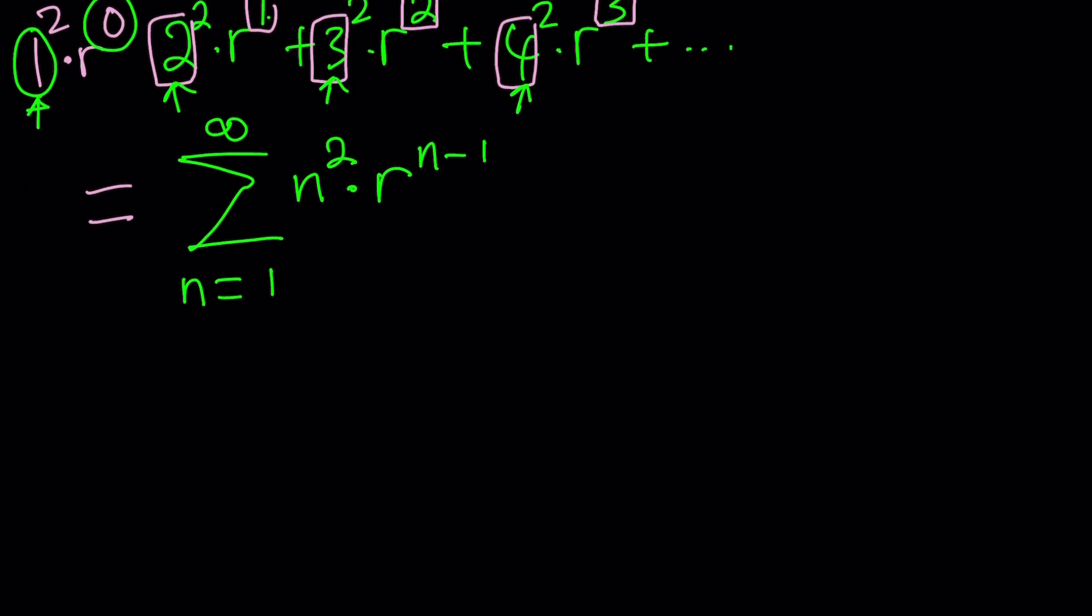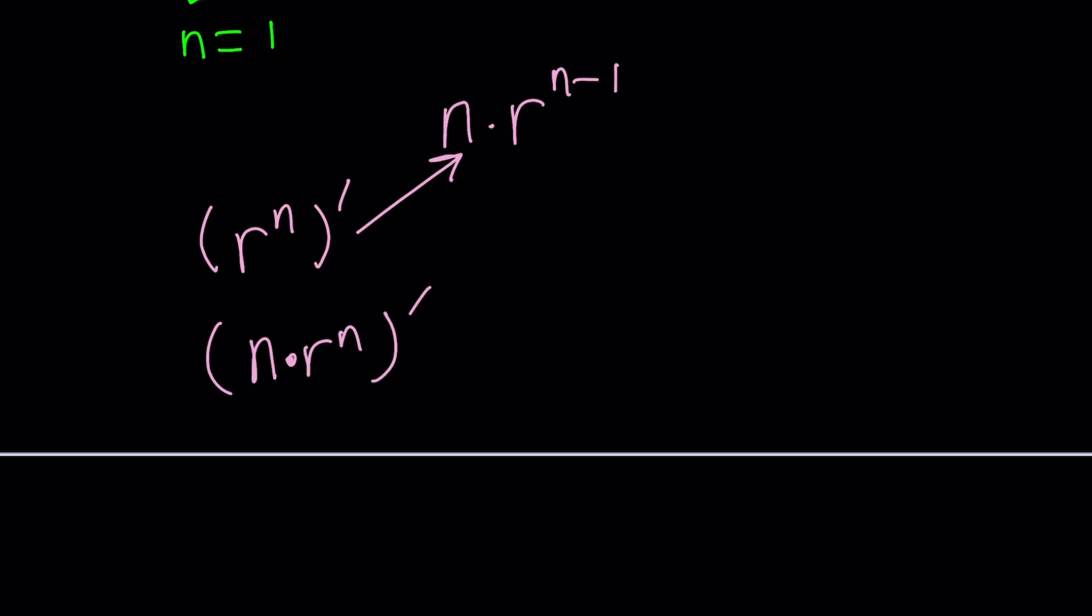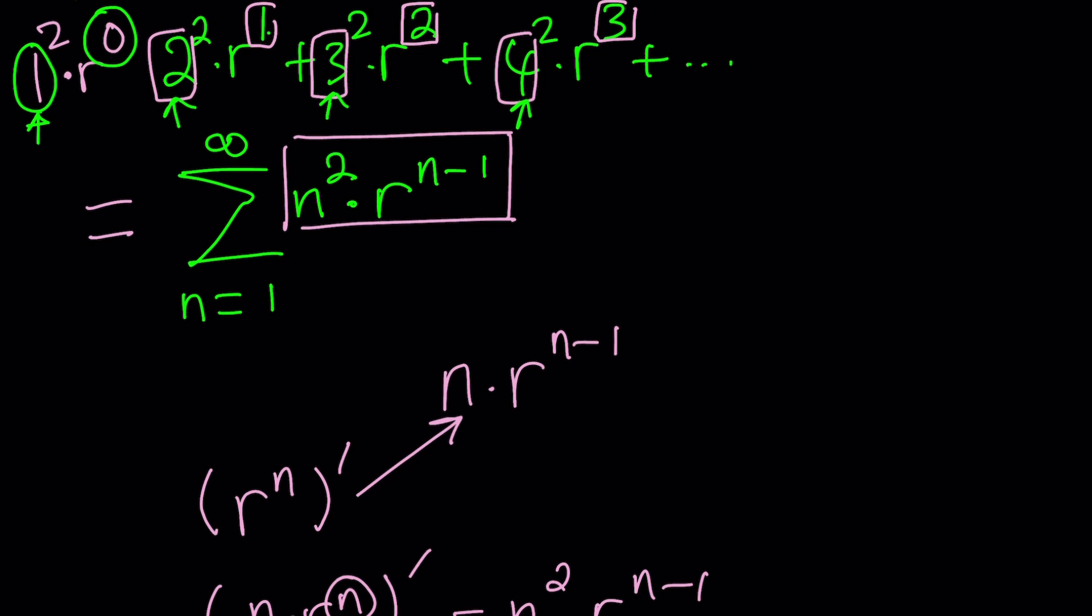I have n squared times R to the power n minus 1. Now if I had n times R to the power n minus 1, this would be very easy to deal with. Because I could take R to the power n, differentiate it. That's going to give me that. But I don't have n times R to the power n minus 1. Instead, I have n squared. But that can be taken care of. If you differentiate n times R to the n, this n is a constant because we're differentiating with respect to R, which is the variable in this case. It's going to be n times n, which is n squared times R to the power of n minus 1. So we got the term we're looking for.